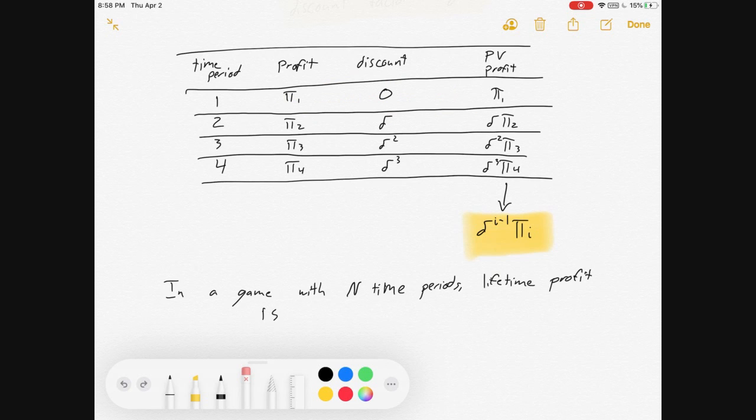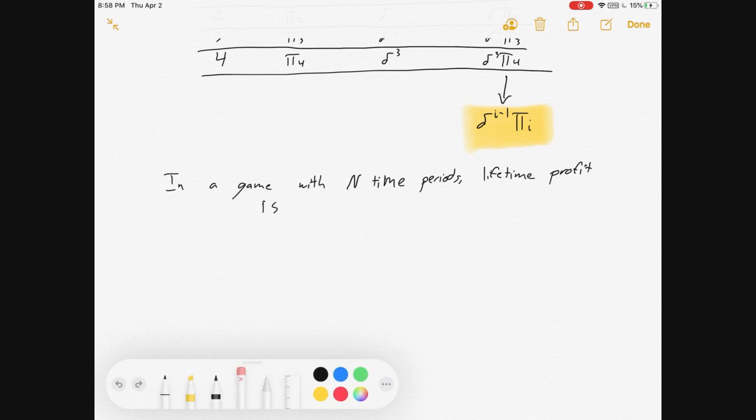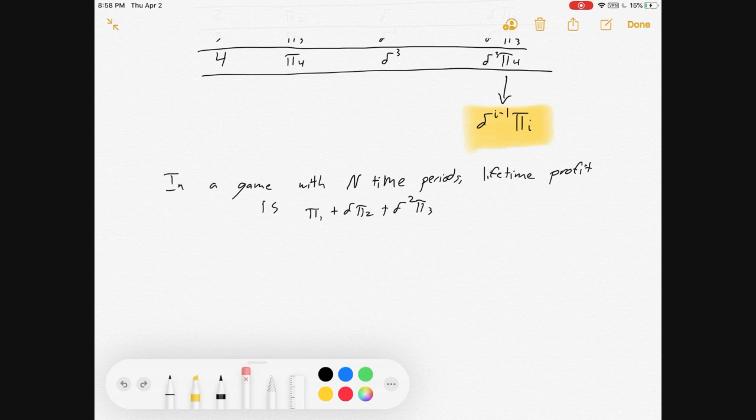So there's that. Now, in a game with n time periods, lifetime profit is π1, today's payoff, plus discounted tomorrow's payoff, plus discounted the next day's payoff, plus discounted the next day's payoff, and so on.